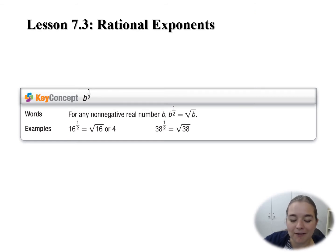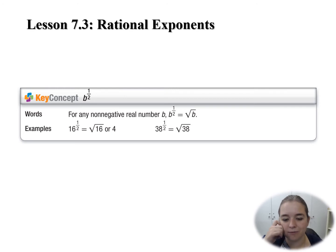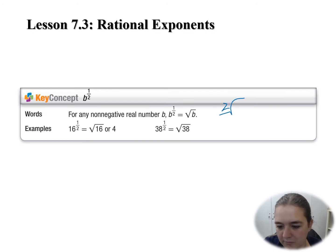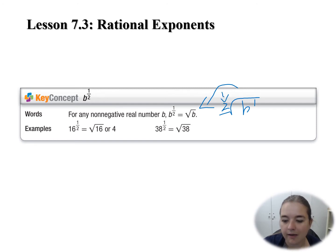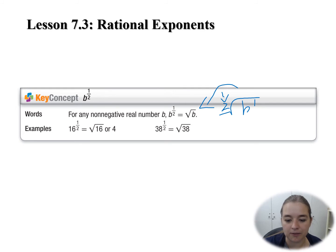Thinking back about rational exponents, there are two pieces. If I have b to the power of 1 half, that tells me the squared root of b to the power of 1, which I can represent as just the square root of b. If I have that radical sign all by itself, the 2 is implied — I don't need to write it. And the exponent of 1 on b is also implied. So b to the power of 1 half is the same thing as the square root of b.